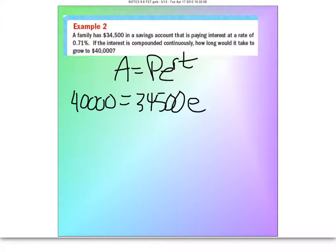Be careful on this rate. This is a percent. To make it a decimal, move the decimal place 2 to the left. So this is actually going to be 0.0071.